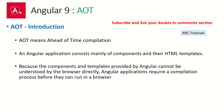AOT stands for ahead-of-time compilation. All of the Angular code is written in TypeScript — there are components, pipes, directives, services, and metadata. All of this is understood by Angular but it is not understood by browsers. That's why it needs to be converted into code which the browsers can understand, which corresponds to JavaScript or ES6.